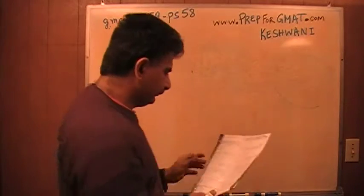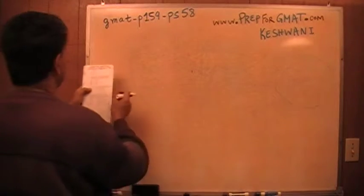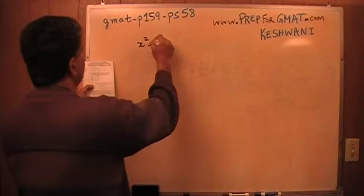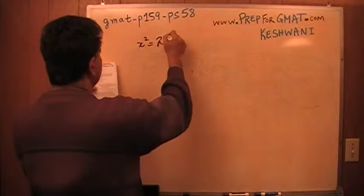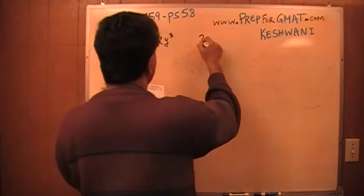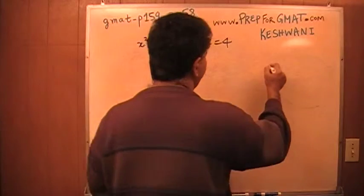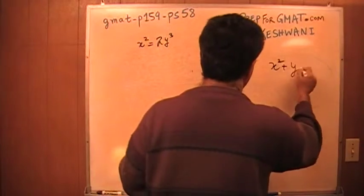It says, if x squared equals 2 times y cubed, and we are told that 2y equals 4, the question is, what is the value of x squared plus y?